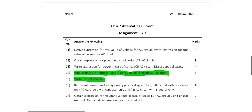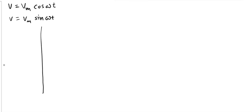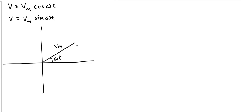We know that in case of an AC circuit, voltage can be given by v = Vm cos(ωt), or else we can write voltage as Vm sin(ωt). Now, what if we take a Cartesian plane and take Vm as a vector? Suppose we take a vector of length Vm and represent it at an angle ωt.